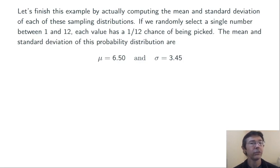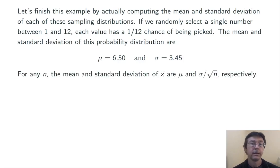Let's finish this example by actually computing the mean and standard deviation of each of these sampling distributions. If we randomly select a single number between 1 and 12, each one is going to have a probability of 1/12 of being picked. And we can use that fact to compute the mean and standard deviation just by using our usual formulas for mean and standard deviation of a discrete random variable. We get μ is 6.50 and σ is about 3.45. For any n, the mean and standard deviation of the sample mean are going to be μ and σ over the square root of n, respectively.